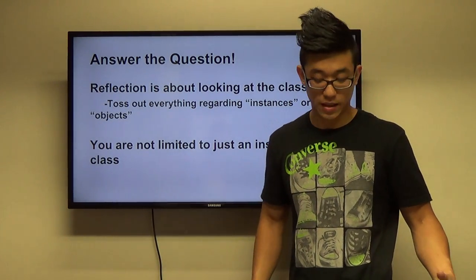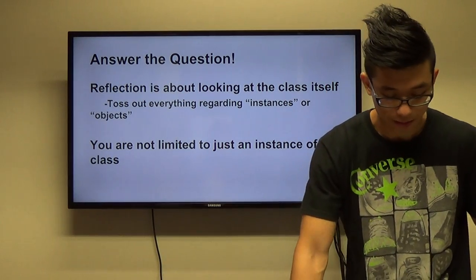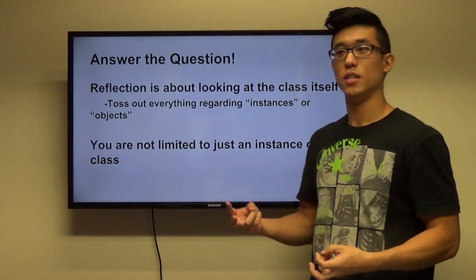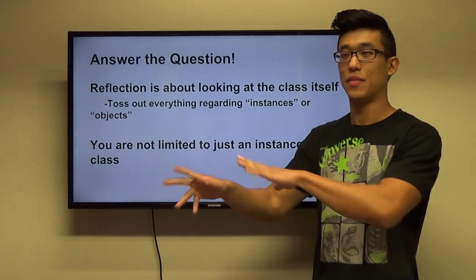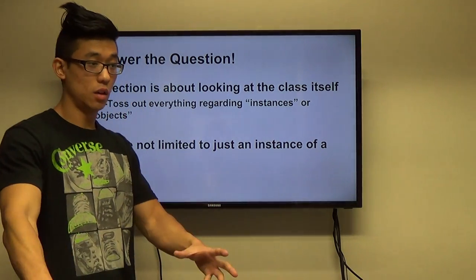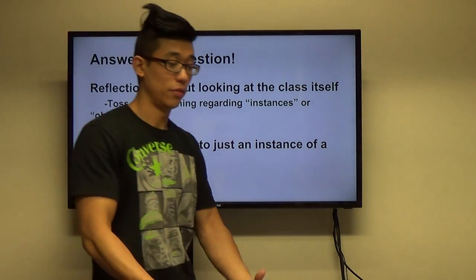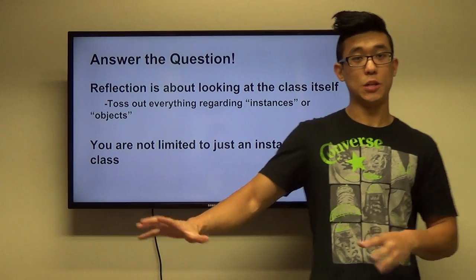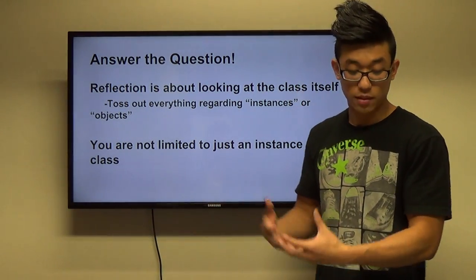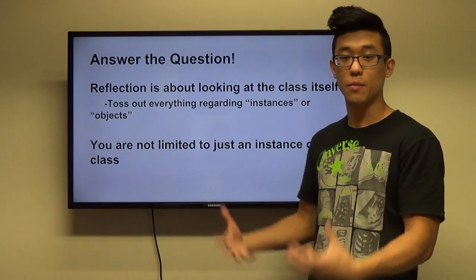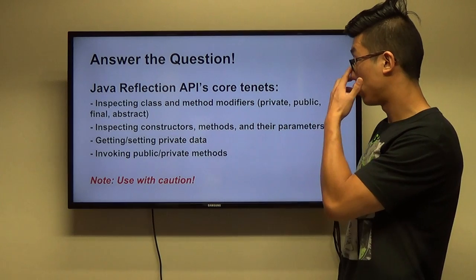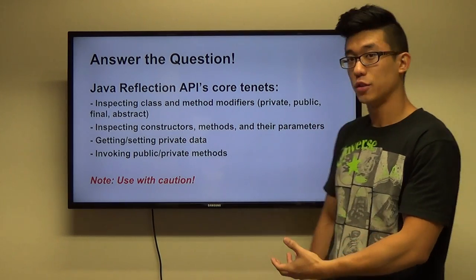One thing that really clicked for me was realizing that reflection is about looking at the class itself — you should toss out everything regarding instances or objects. This doesn't mean you can't make a new instance of a class by invoking a constructor at runtime, but the most important thing is looking at the class itself. You're not limited to an instance of a class.